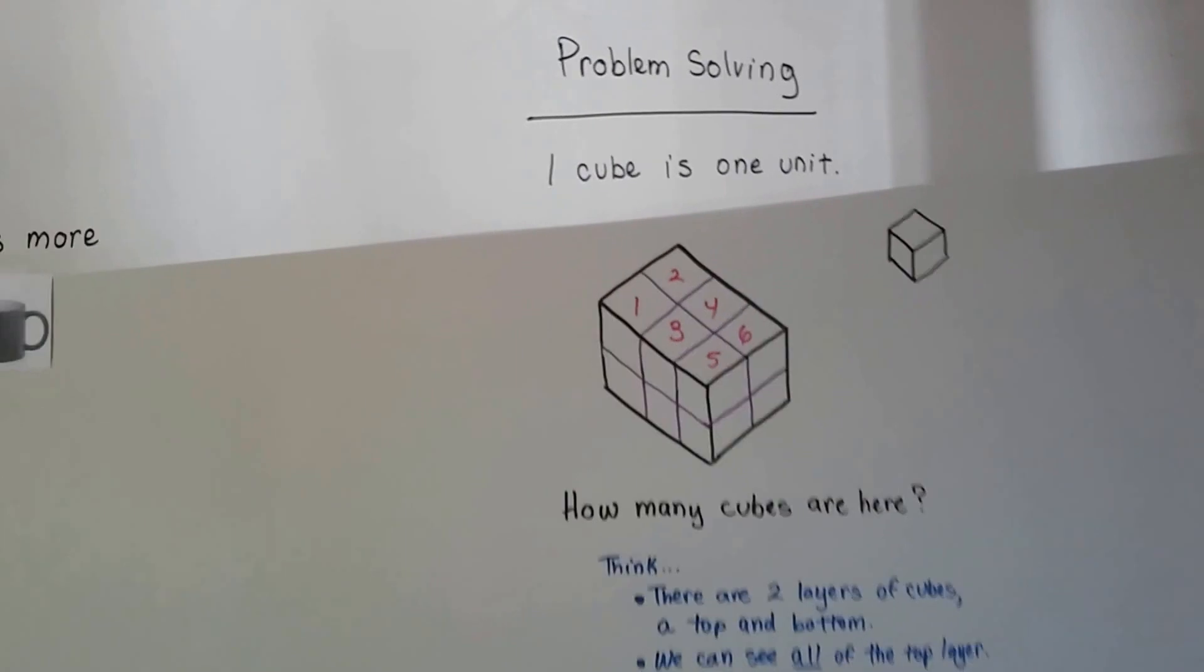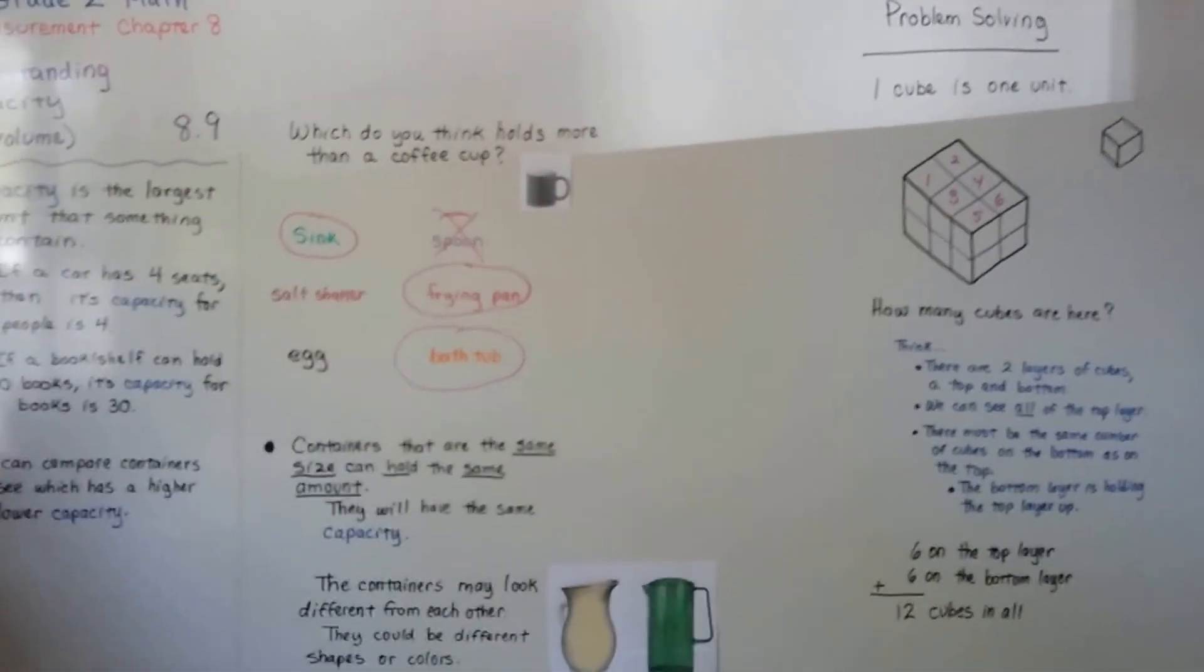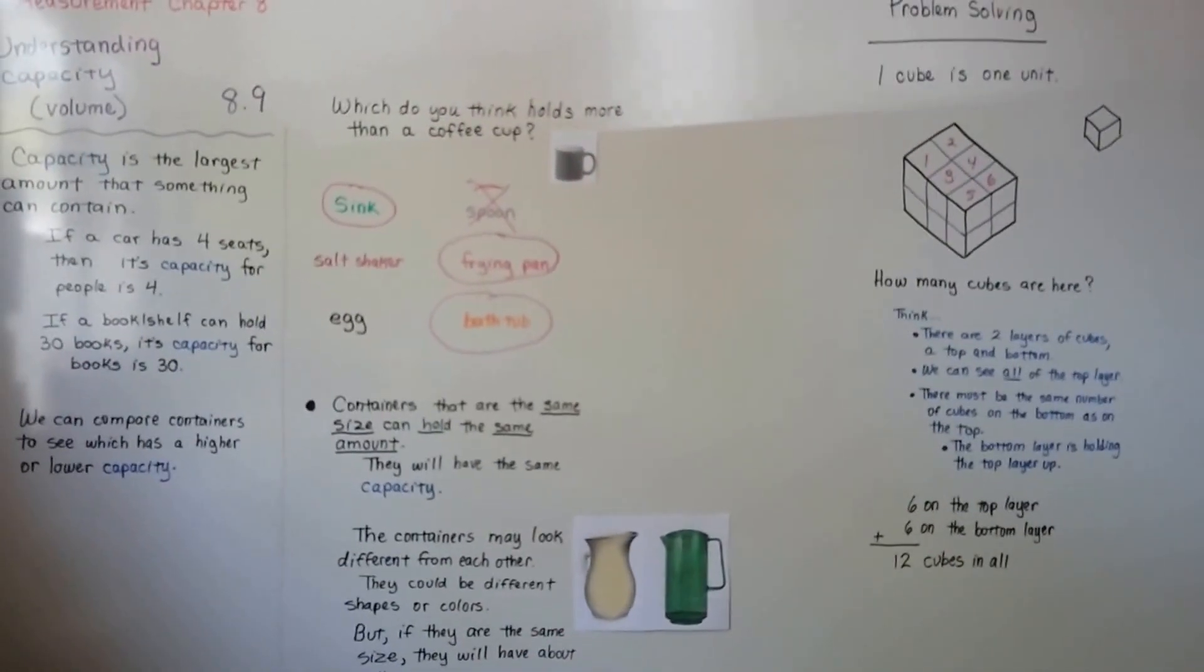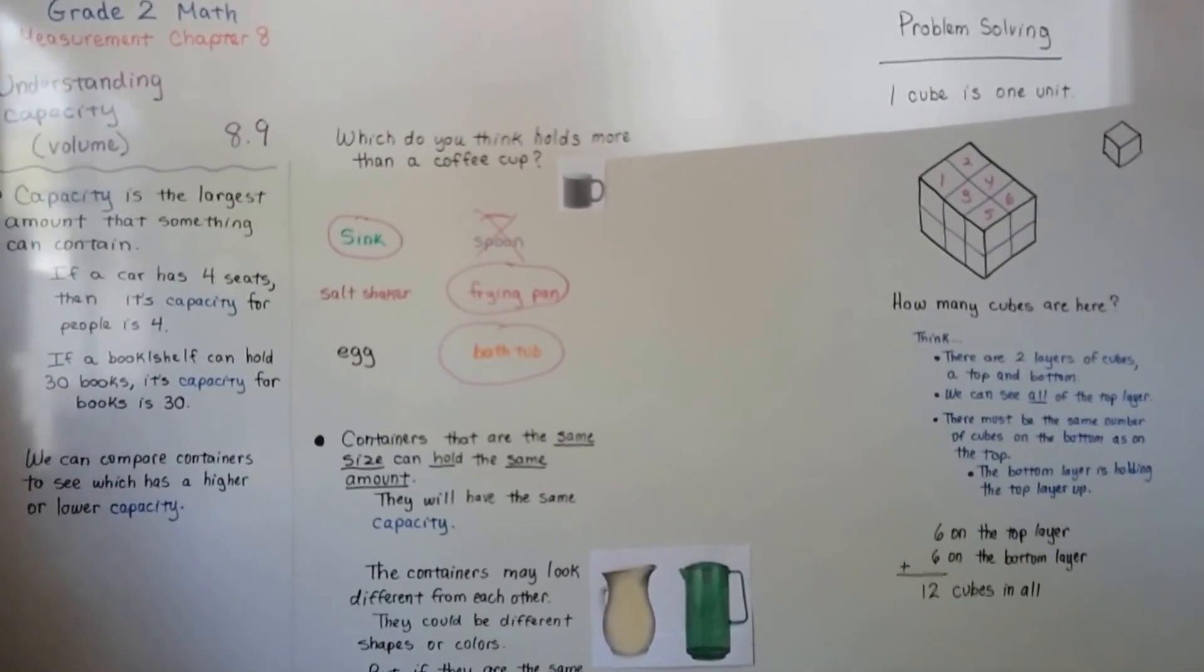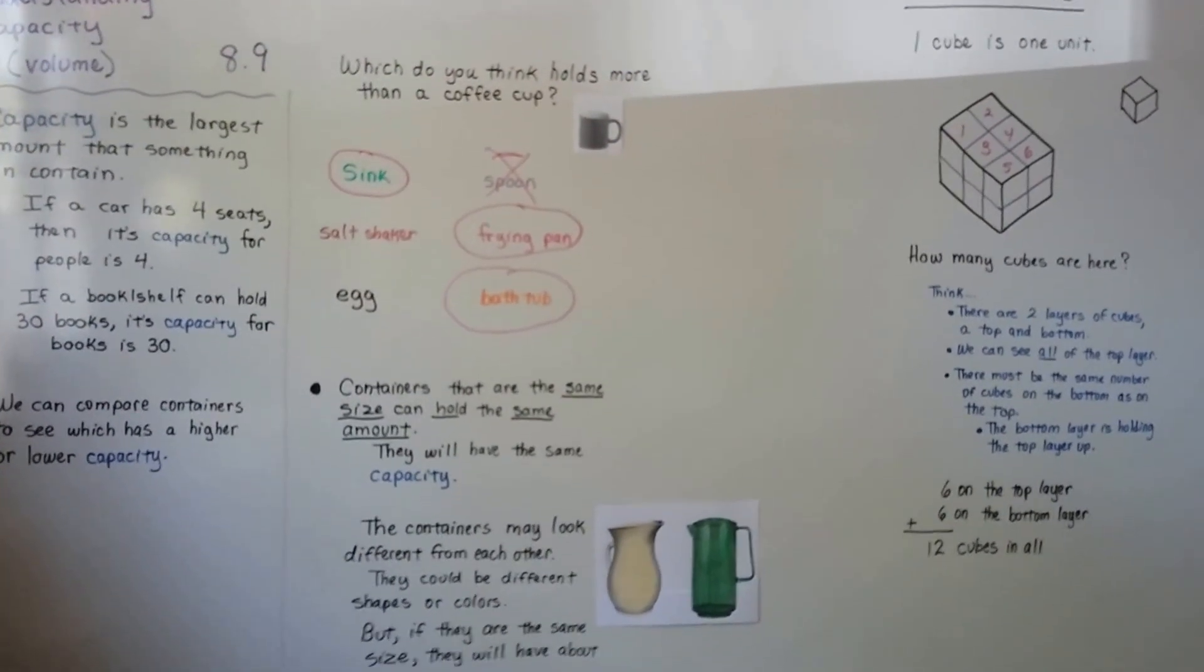So, remember that capacity is the largest amount that something can hold, something can contain. And if containers look a little bit different but they're the same size, they probably hold about the same amount. Okay? We're going to get into talking about cups and pints and quarts in the next video. I hope I'll see you there. Bye!